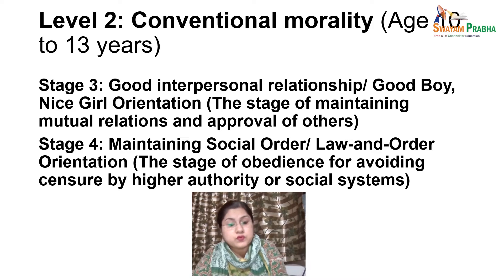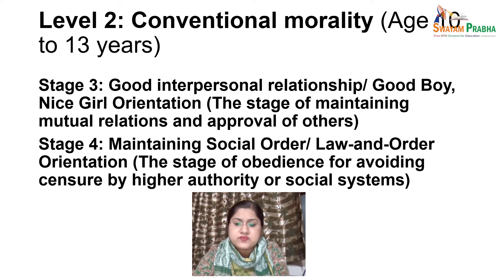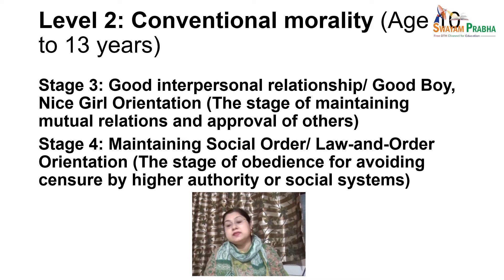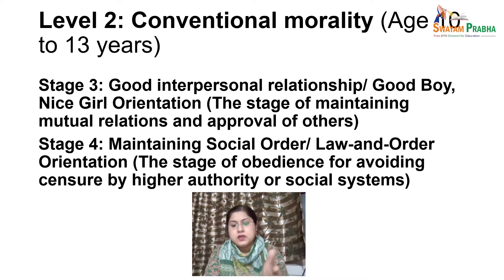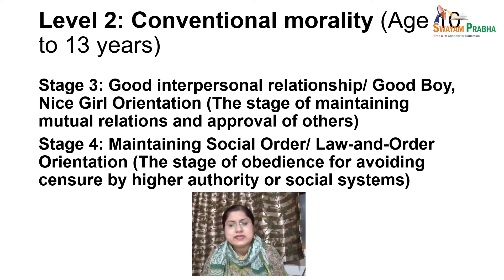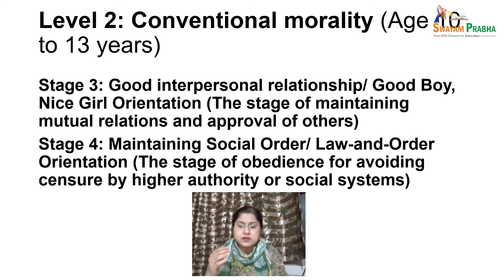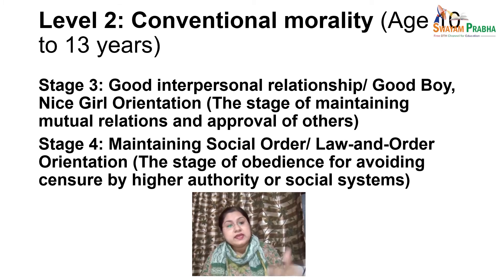Stage 4 is maintaining social order — law and order orientation. In this stage, the child blindly accepts rules and conventions because of their importance in maintaining a functioning society. Rules are seen as being the same for everyone, and obeying rules by doing what one is supposed to do is seen as valuable and important. Most active members of society remain at stage 4, where morality is still predominantly dictated by an outside force — most often the social order.